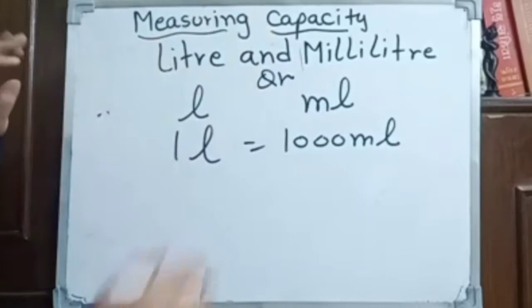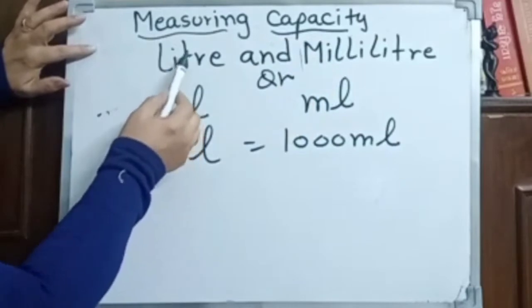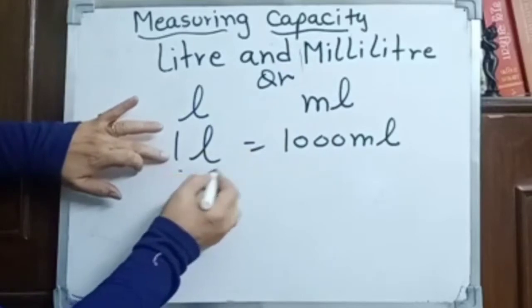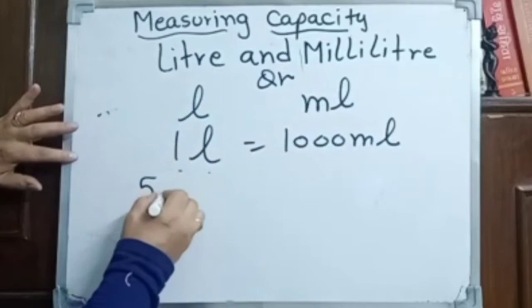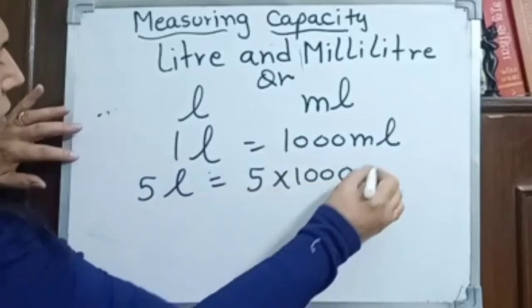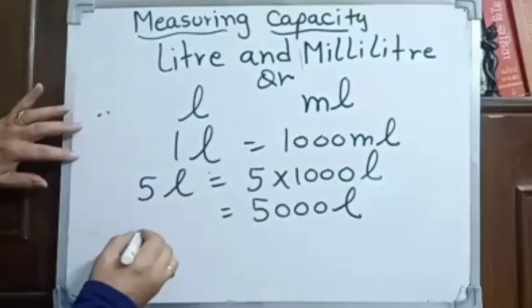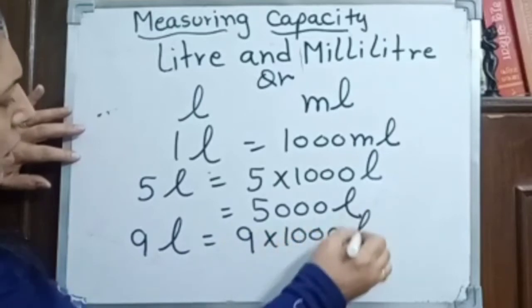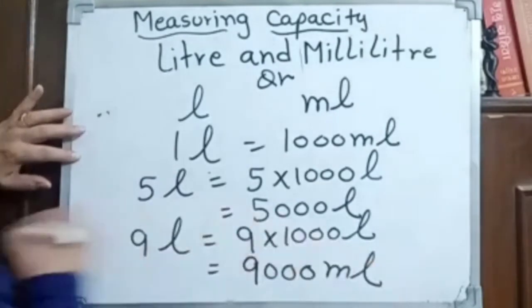Now you know very well what capacity is. For liquids we use liter and milliliter. For liter we use L, and for milliliter we use ml. One liter equals 1000 milliliter. So if you have 5 liters, then 5 into 1000 gives you 5000 milliliter. If we have 9 liters, then 9 into 1000 gives us 9000 milliliter.